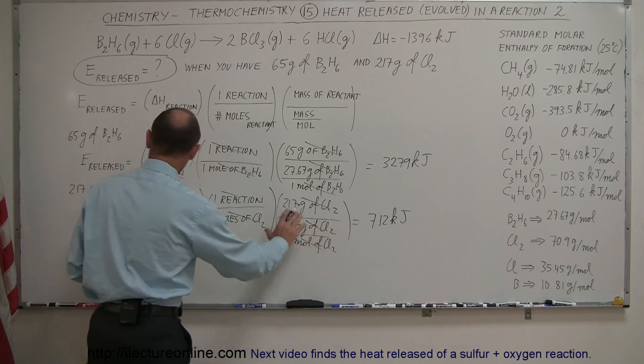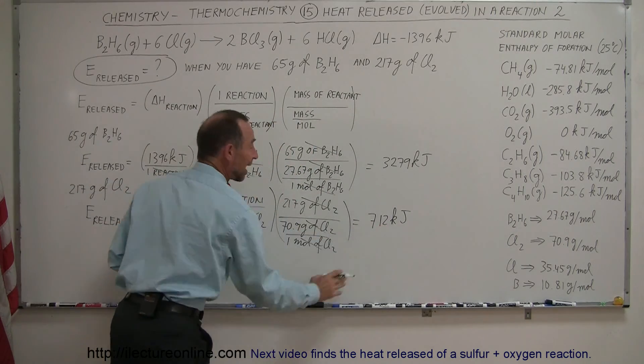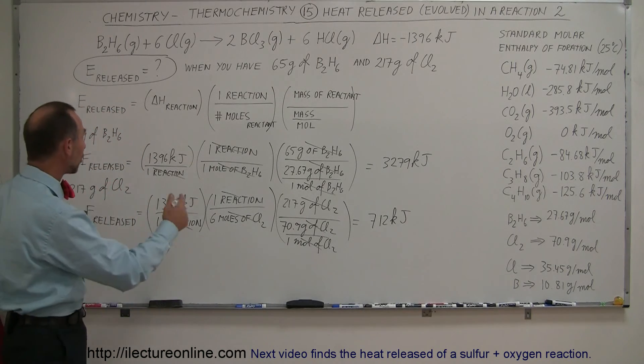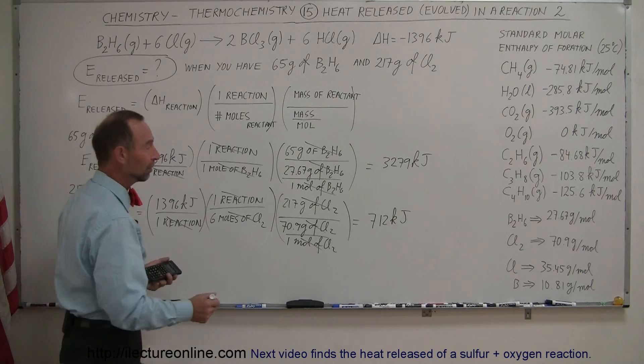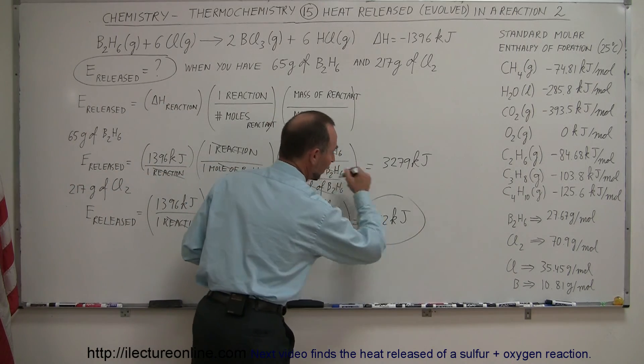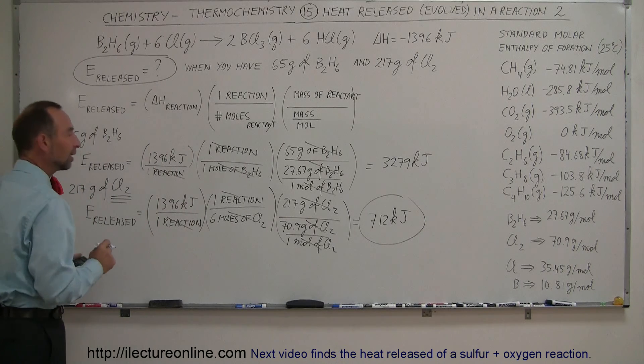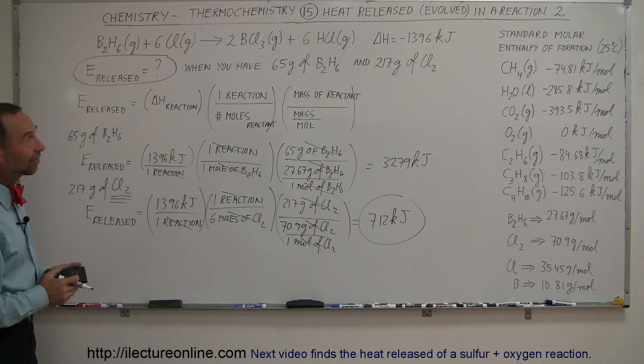Clearly, since you have less energy released in the reaction, there must not be enough of the chlorine gas to make more of the diborane react. Therefore, this is the answer, and this is the limiting reagent. And that's how you do that problem.